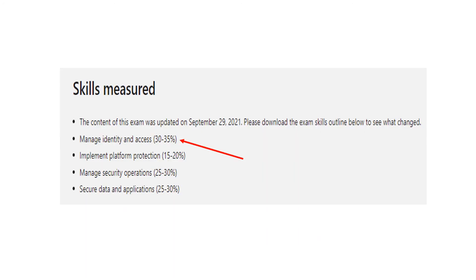We have come to the conclusion of Domain 1, Managed Identity and Access, of the AZ-500 certification exam. Domain 1 of this exam is worth 30 to 35% of the questions. In the next video, we will start with our first set of questions for Domain 2, which is Implement Platform Protection, worth 15 to 20%.